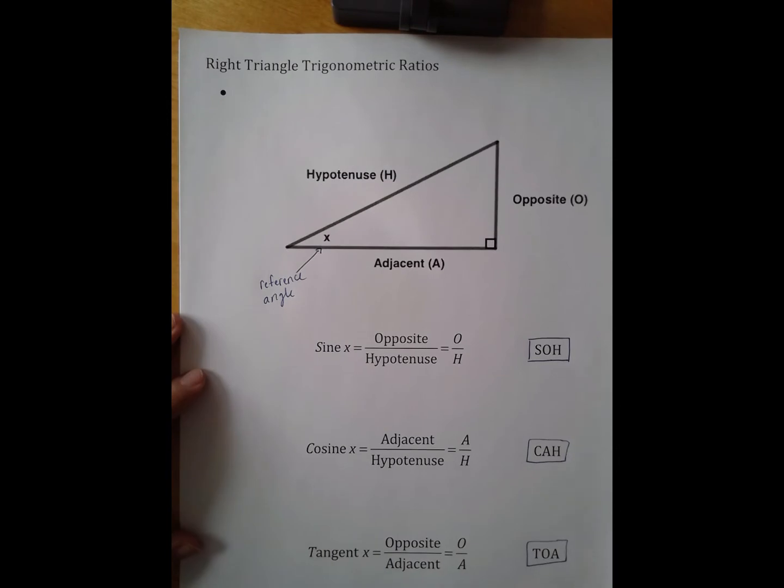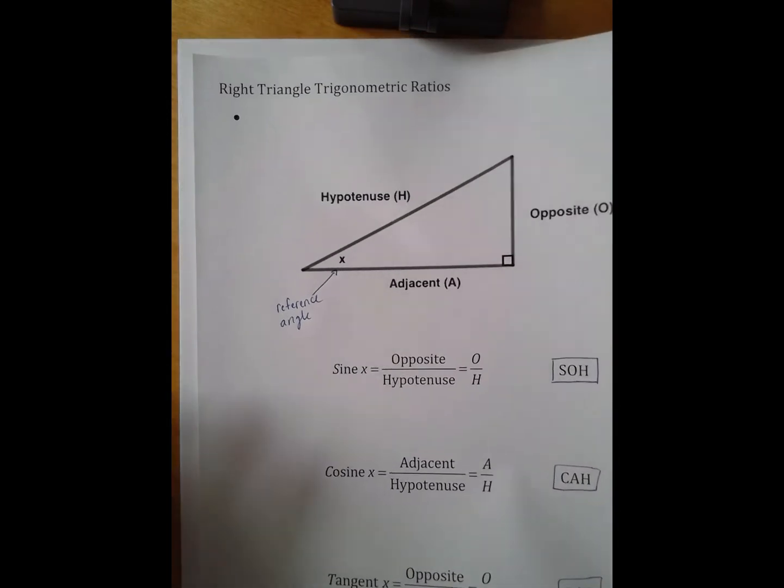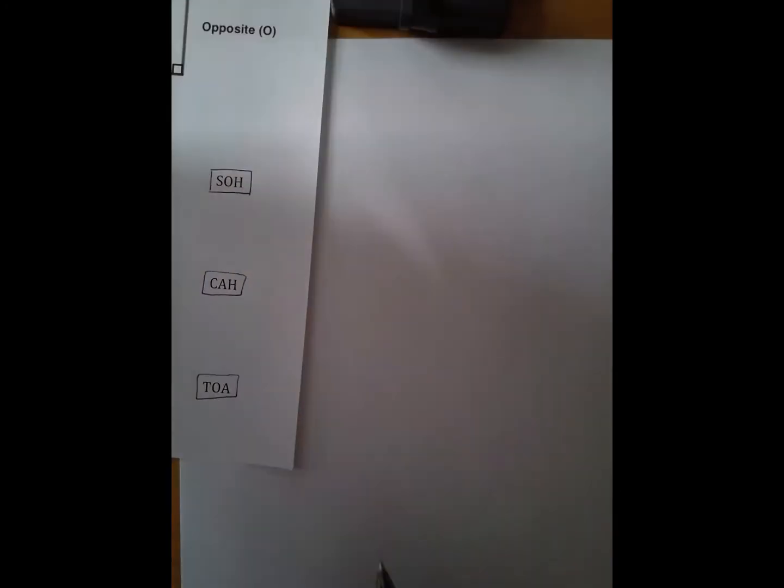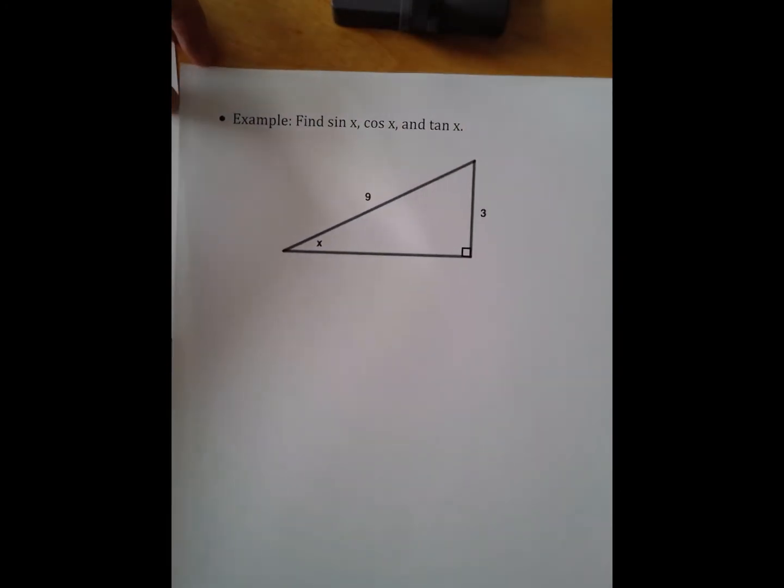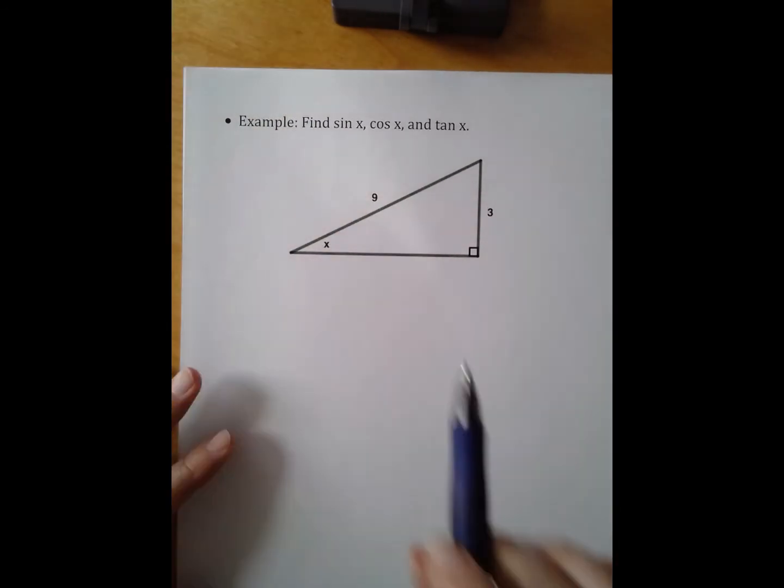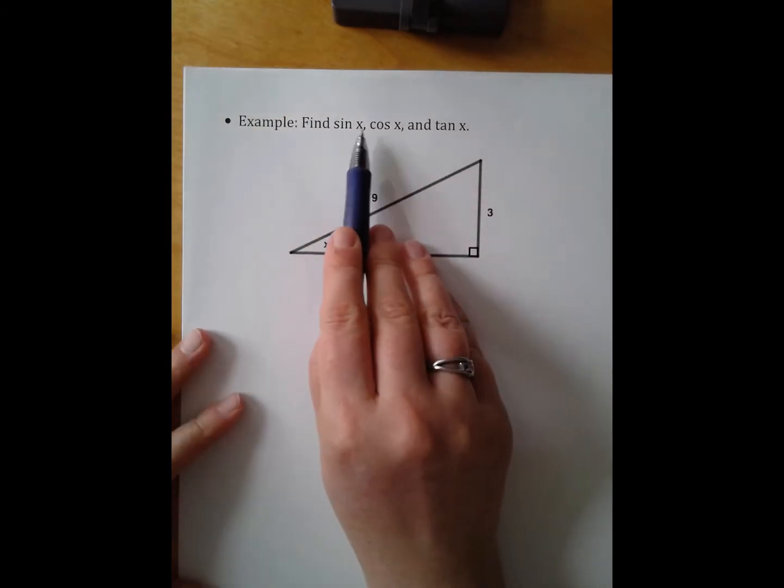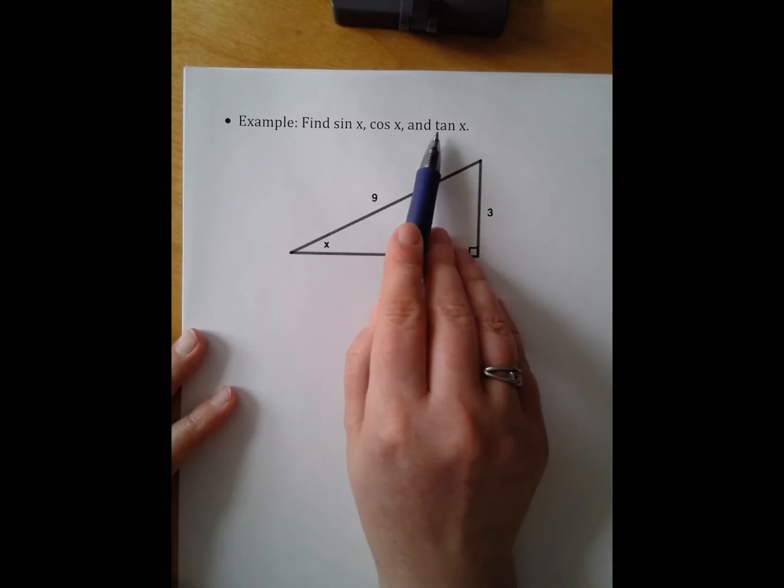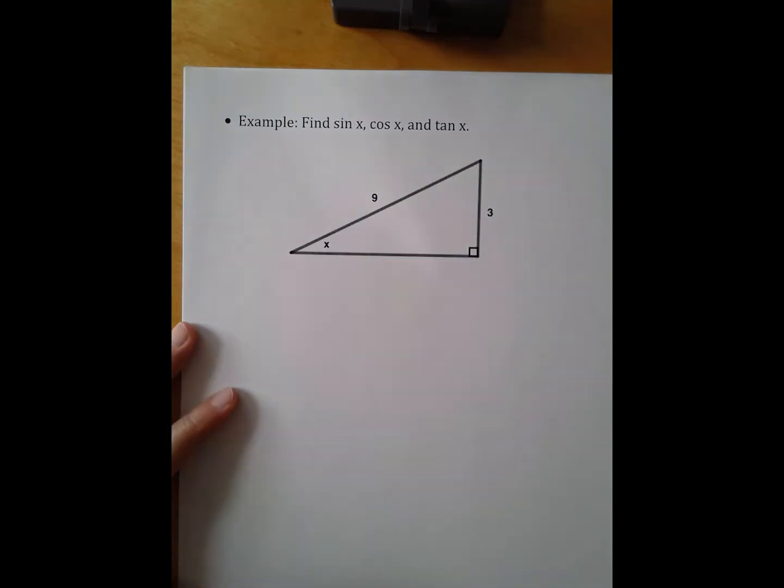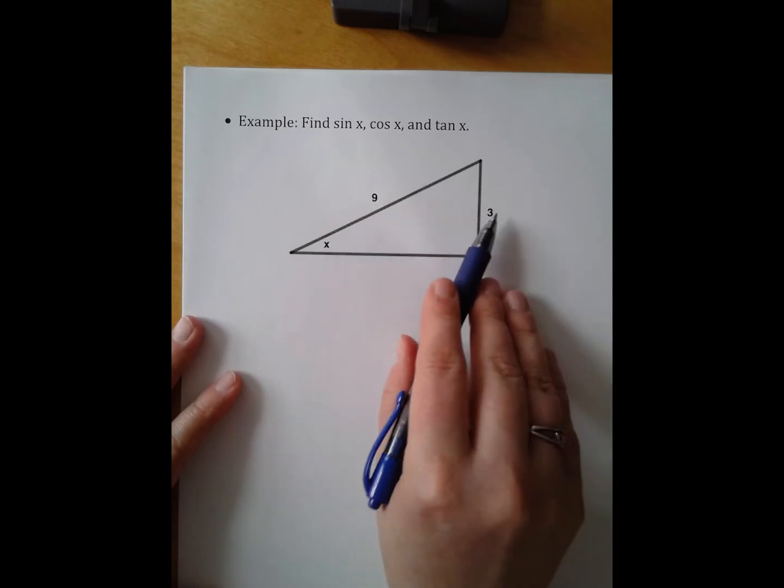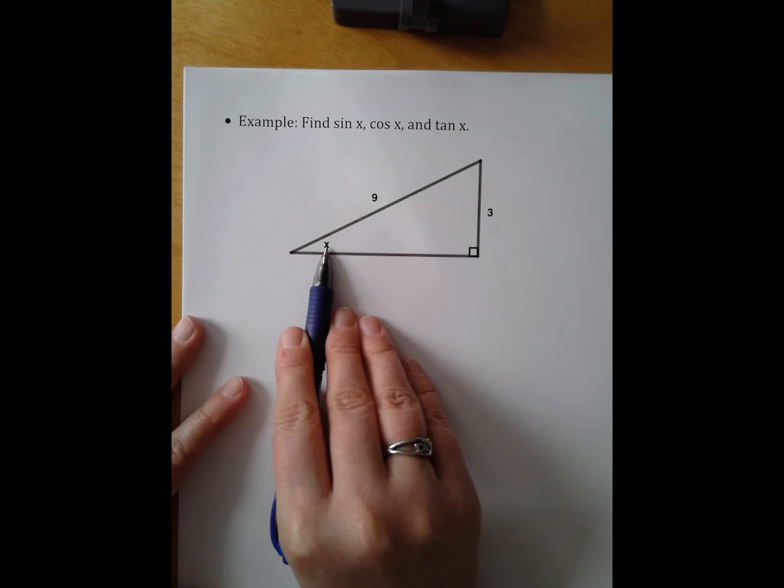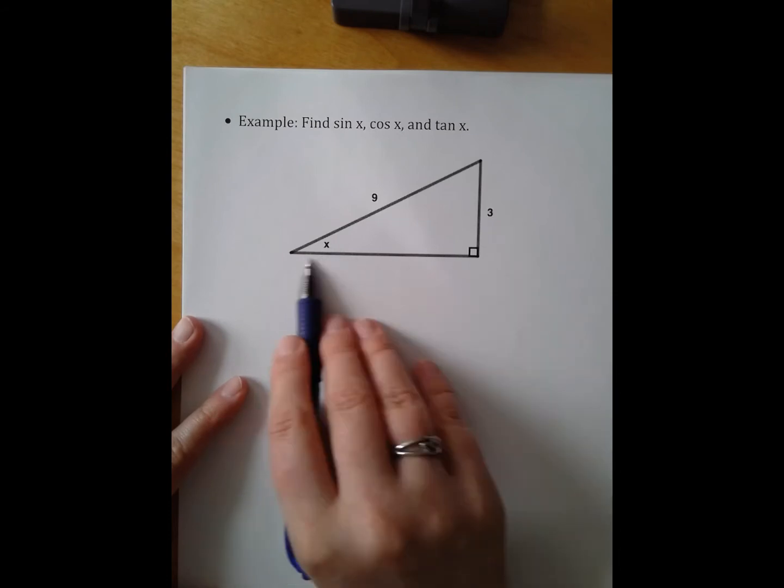Now we need to look at an example so that we know how to use these trig ratios. So our example, we're going to be asked to find sine of X, cosine X, and tan X. The first thing I need to have is what all three sides represent in terms of X, and I also need to know the third side.